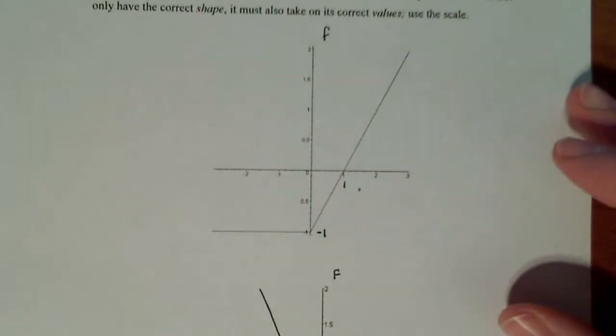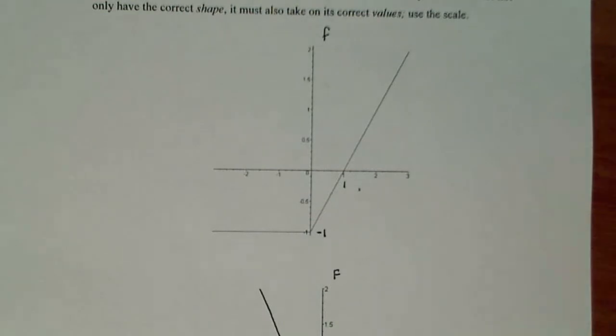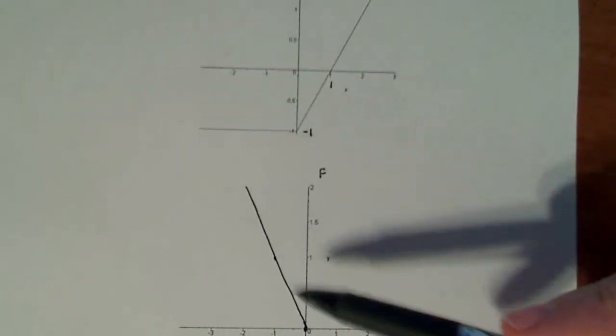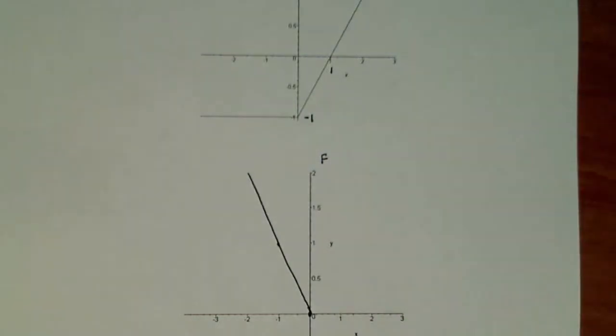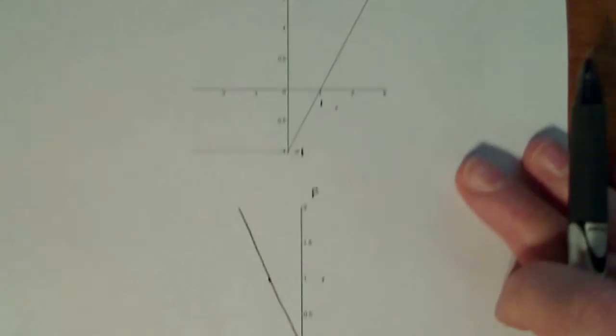Now the other side is going to be a little more challenging. Now notice it said that it must take on correct values. Well, these values were easy to find where minus 1 and 1 and minus 2 and 2. Nice and straightforward because it's a linear function. But this is going to be different.